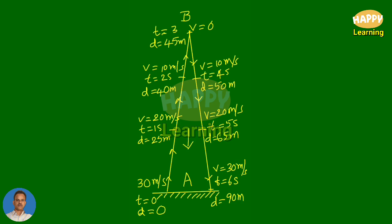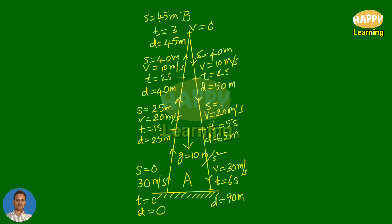The acceleration due to gravity, which acts vertically downwards, is g equal to 10 meters per second squared. Now let us write down the displacements. At the beginning, displacement s is equal to 0. At t equal to 1, displacement s is 25 meters. At t equal to 2 seconds, displacement s is 40 meters. At t equal to 3 seconds, displacement s is 45 meters. Till now, displacement and distance are equal. Now during its return journey, at t equal to 4 seconds, displacement is 40 meters only. At t equal to 5 seconds, displacement is 25 meters only. Finally, when it reaches the ground, displacement s is 0.